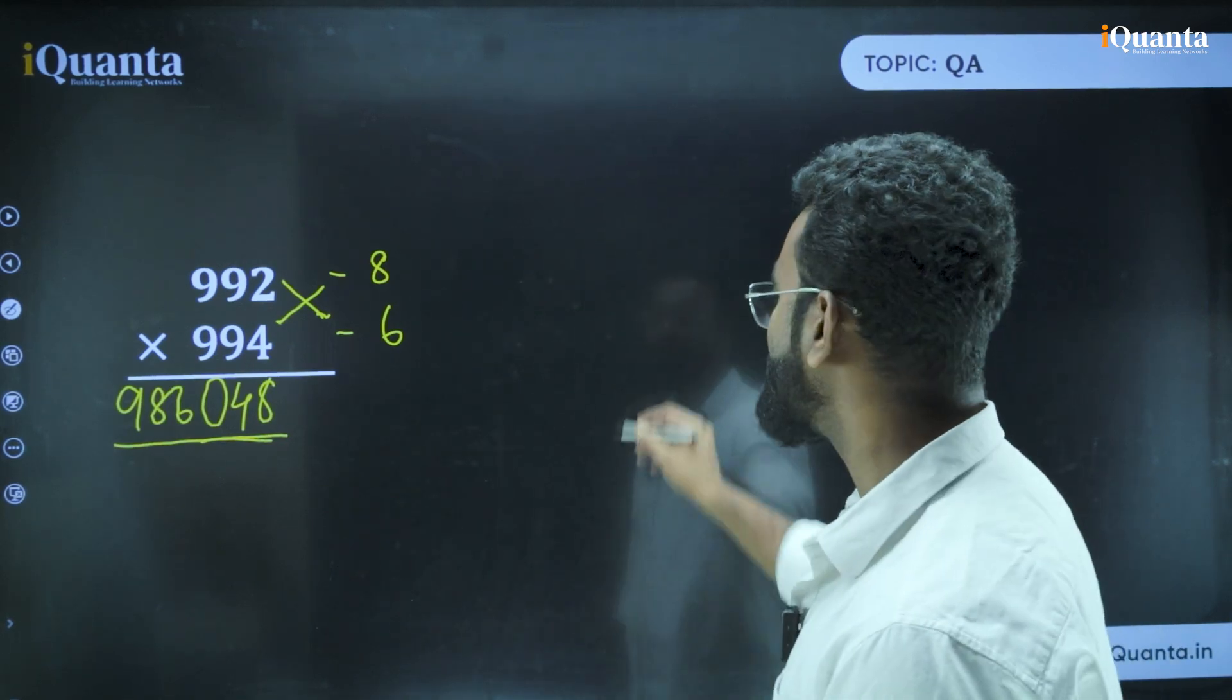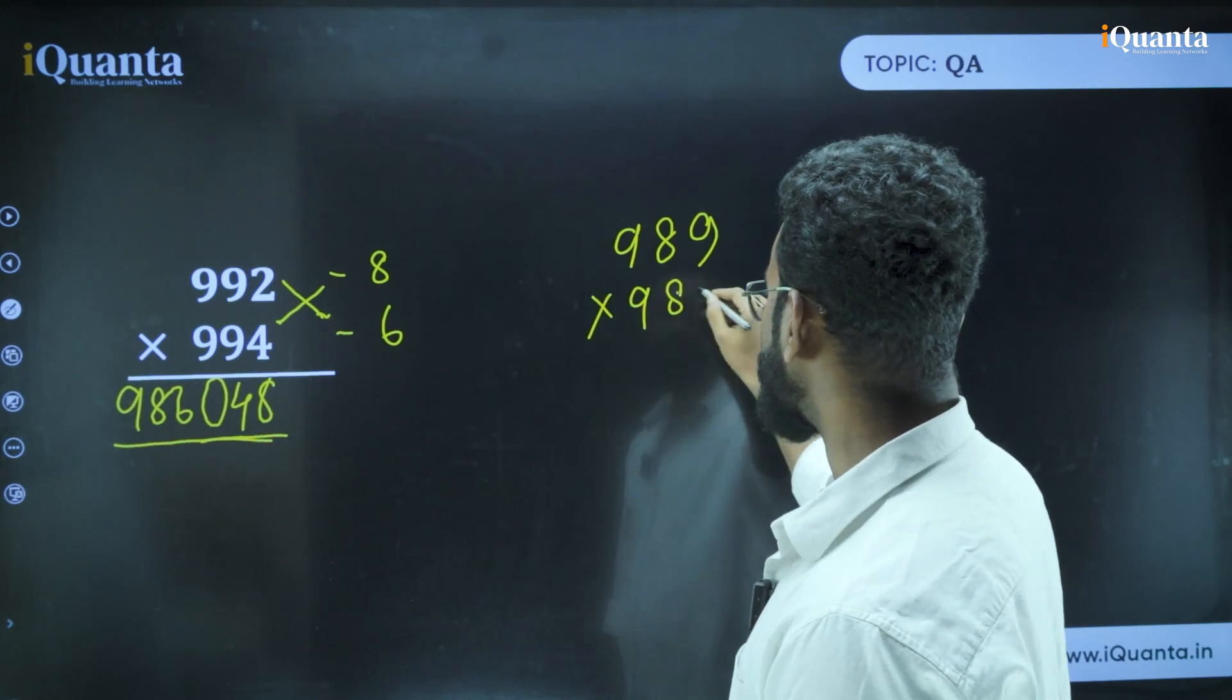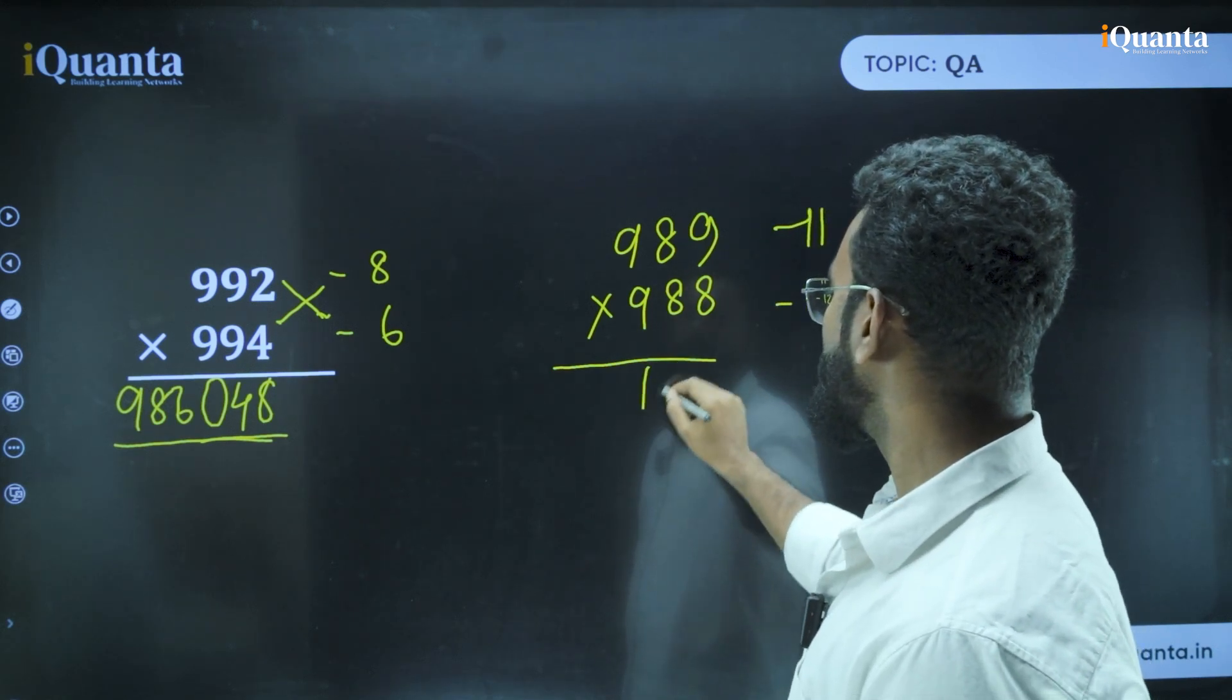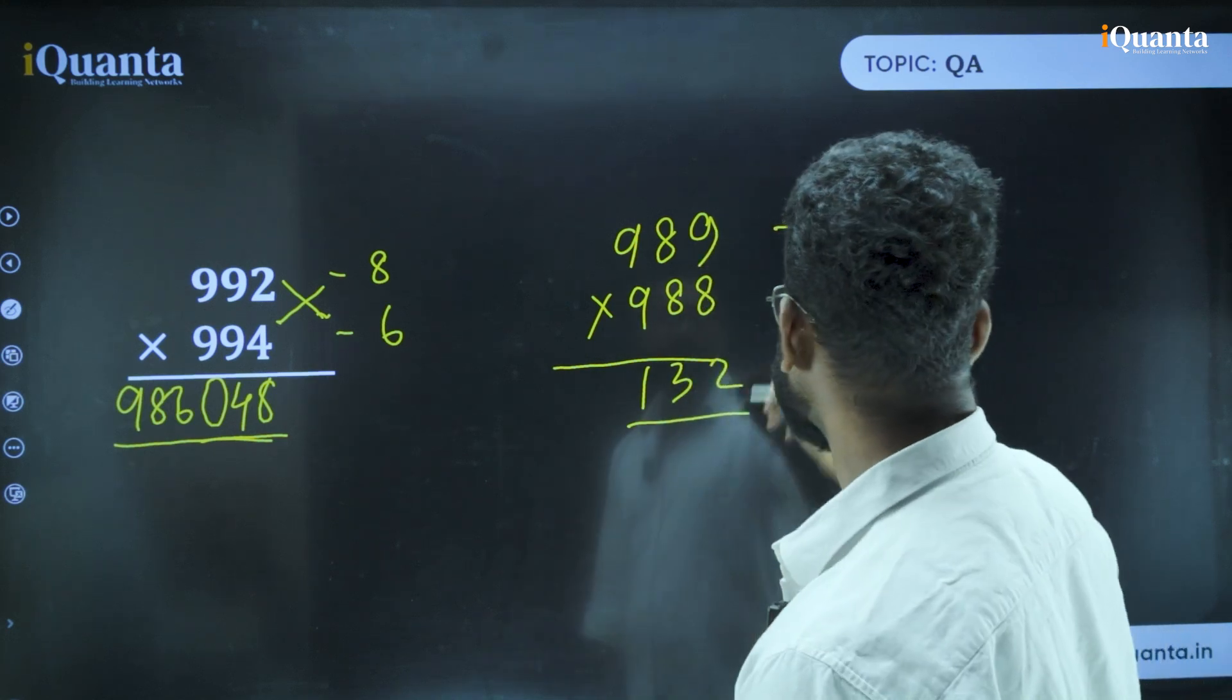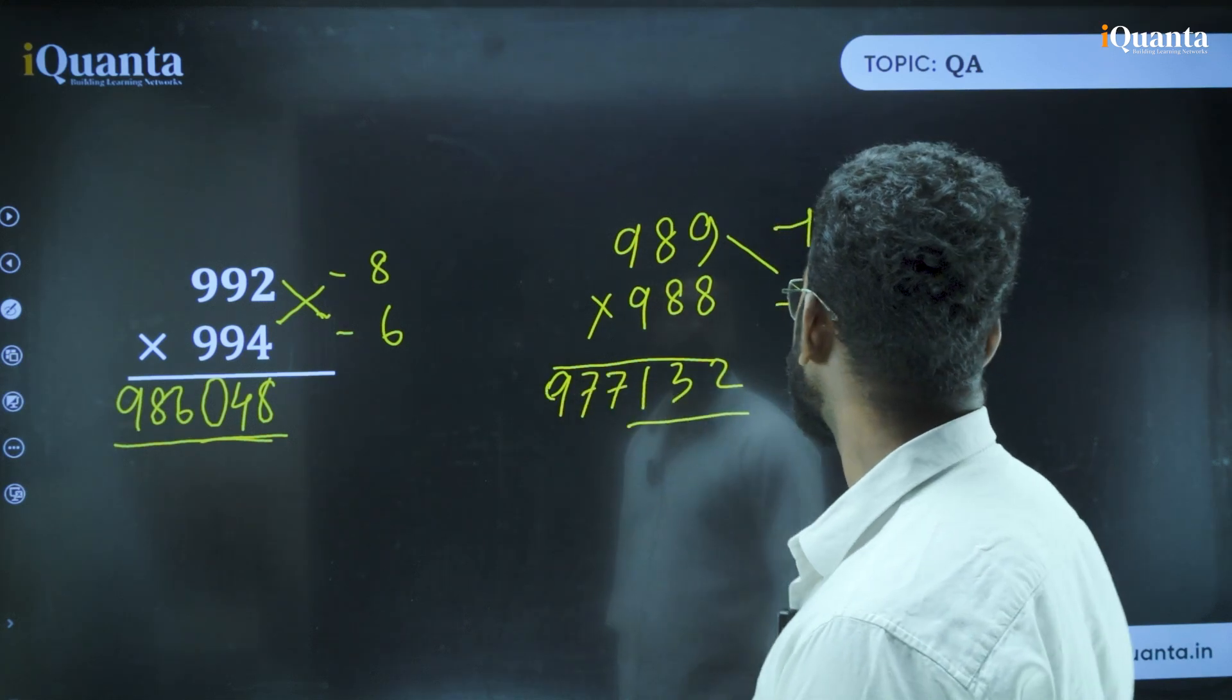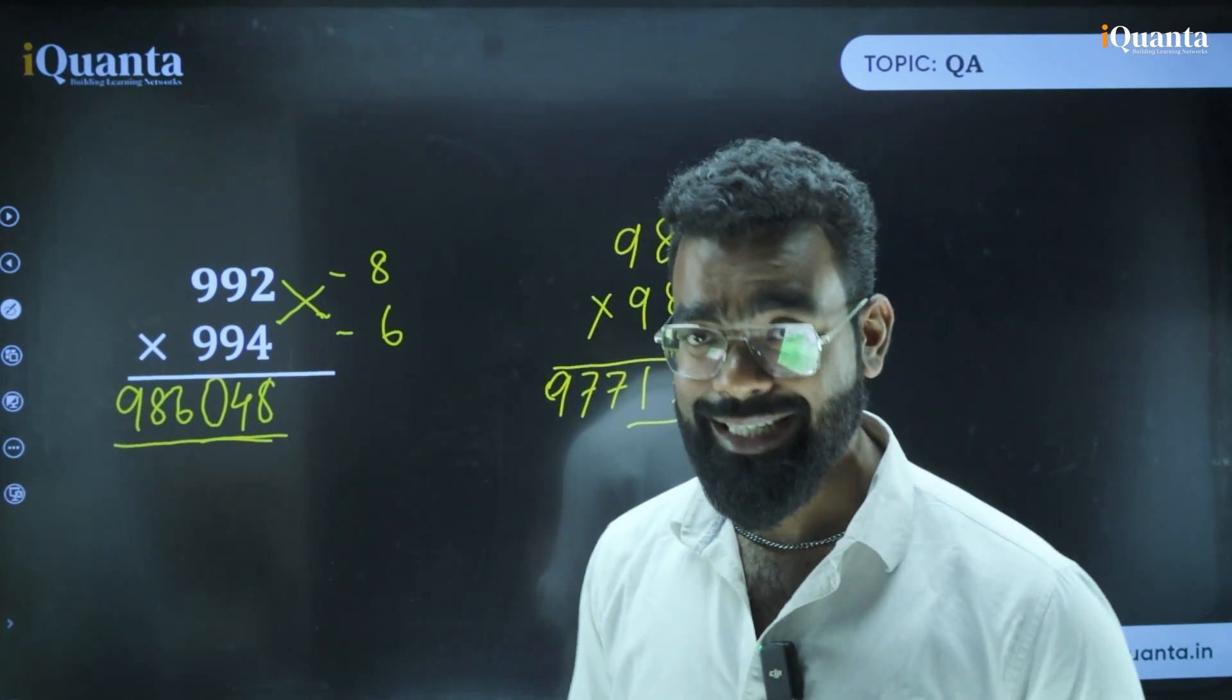Again, I'm giving you another example. Take this number 989 into 988. In this case, this is minus 11 and this is minus 12. So what is 12 into 11? 132. If I have already three digits, I don't need to use another 0. The next step is 989 minus 12 and how much is it? 977. So your answer is 977132. That is the multiplication where the numbers are close to 1000 but both numbers are less than 1000.